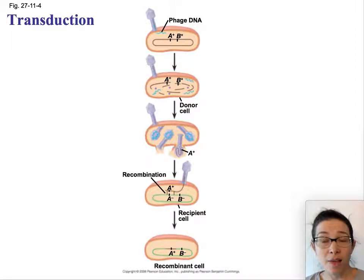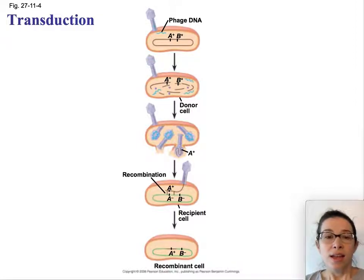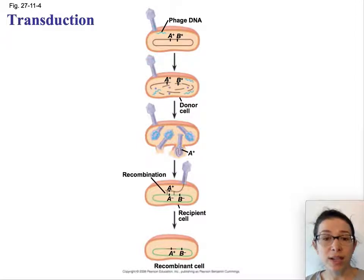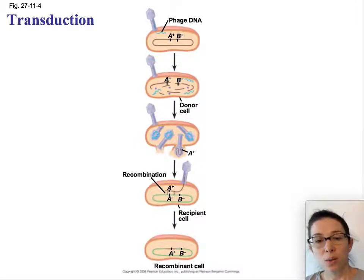One way that bacteria have new forms of DNA introduced is through viruses. Here's a bacteriophage infecting a bacteria. When these viruses are repackaged, some of the DNA from the donor bacteria is packaged into that virus along with the viral DNA. So when that bacteriophage goes to infect another cell, it's actually injecting some of the DNA from the donor bacteria into that new bacteria. That is one way bacteria can have new genes introduced to them.